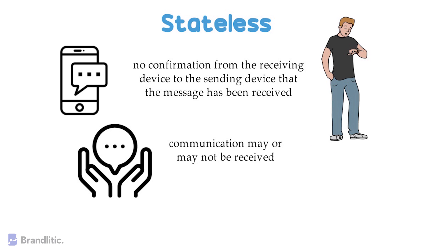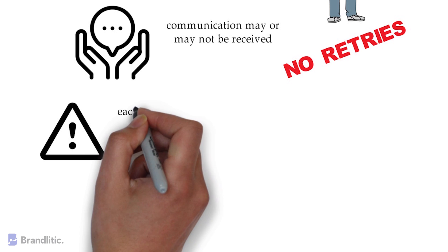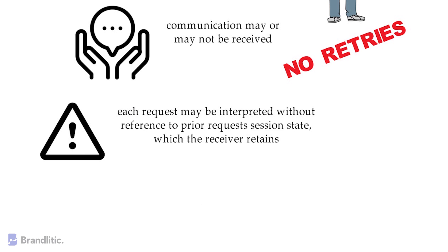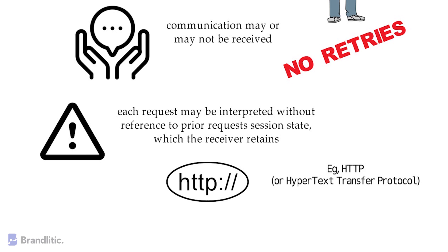Furthermore, there can be no cross verification of status or any retries. This is what stateless is all about. A stateless protocol is one in which the receiver is not required to keep session state from previous requests. The sender sends the session state to the receiver in such a way that each request may be interpreted without reference to prior request session state. One example of stateless protocol is HTTP, or hypertext transfer protocol, where each request is executed independently of the request that came before it. This implies that once a transaction is completed, the connection between the browser and the server is also terminated.